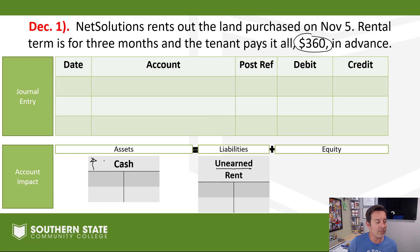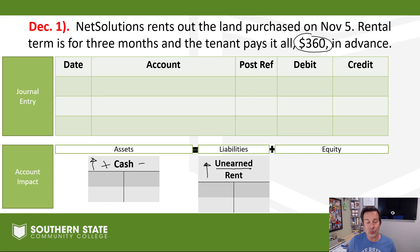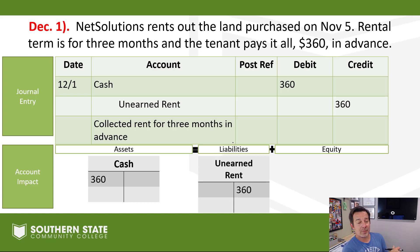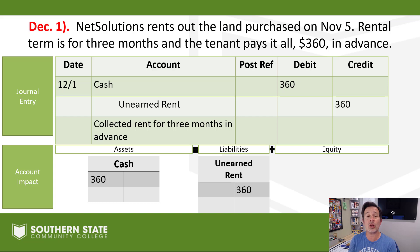Our cash account needs to go up to reflect the $360 we collected, and now we have a liability — unearned rent — that needs to go up too. On the right-hand side of the accounting equation, liabilities go up on the right (the credit side). The entry is a debit to cash for $360 and a credit to unearned rent. That's our liability to provide three entire months of rent.